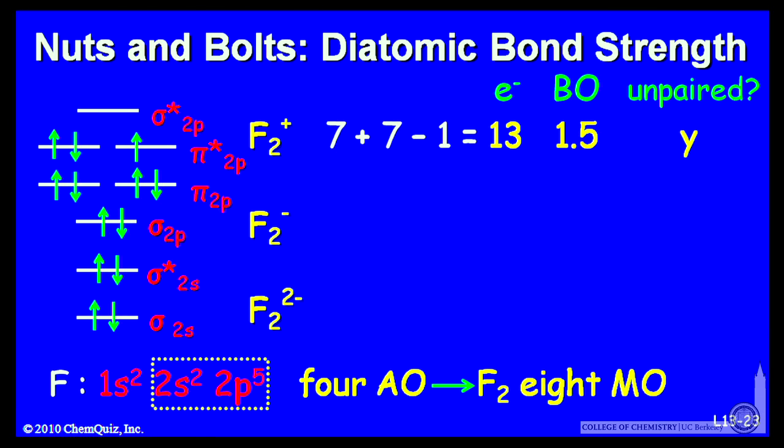Let's look at F2 minus. Now I've added an electron, so I have 7 from each fluorine plus 1 for 15. That's 2 more than the 13 we have here, so let's add 2 more.